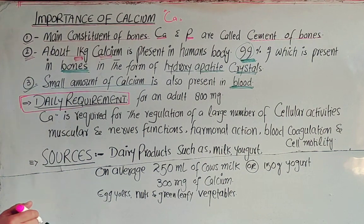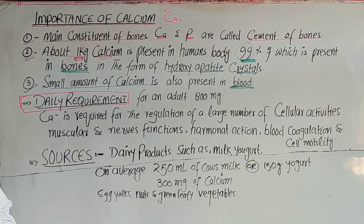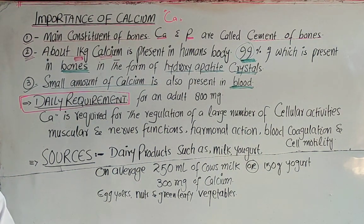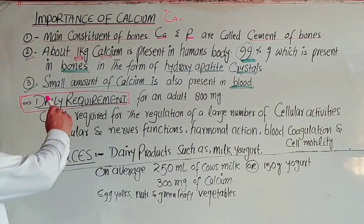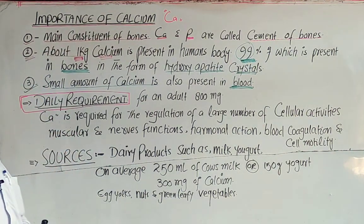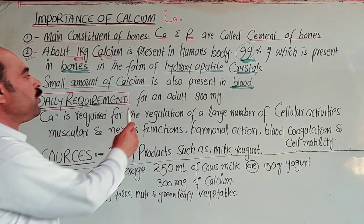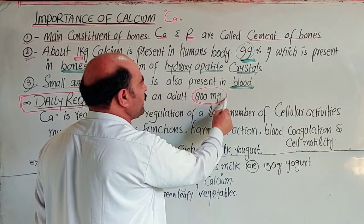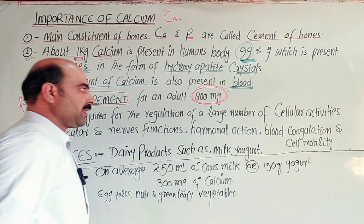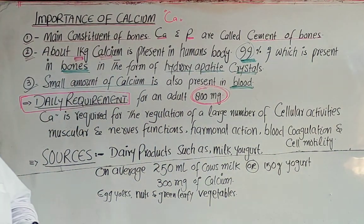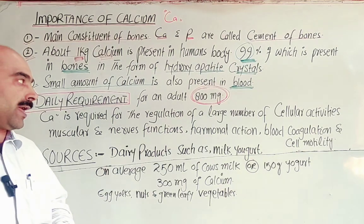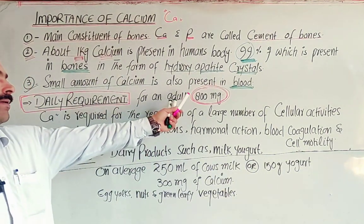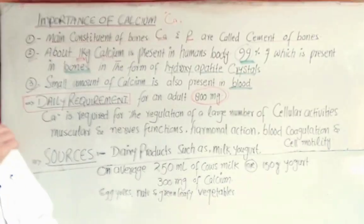Regarding the daily requirements of calcium for the human body: the food, vegetables, fruits, and other food items we consume daily must provide the required amount of calcium. The daily requirement for an average adult of around 25 years old is 800 mg of calcium per day.